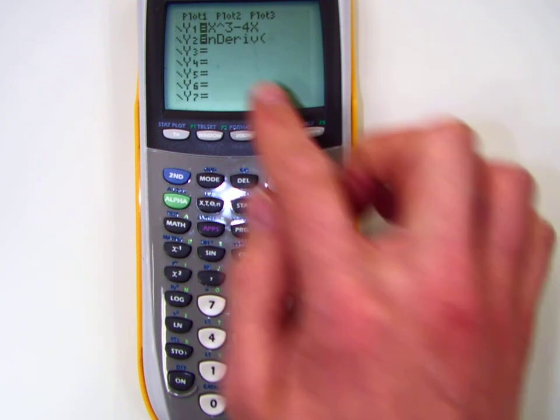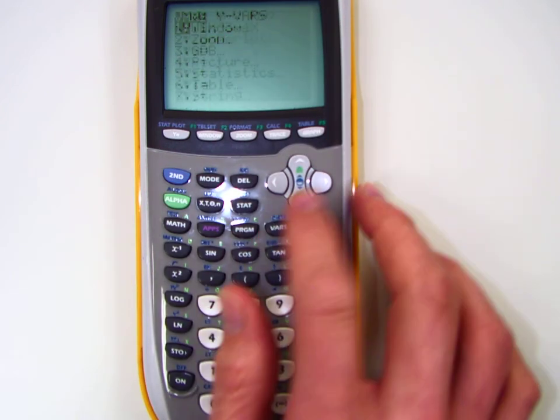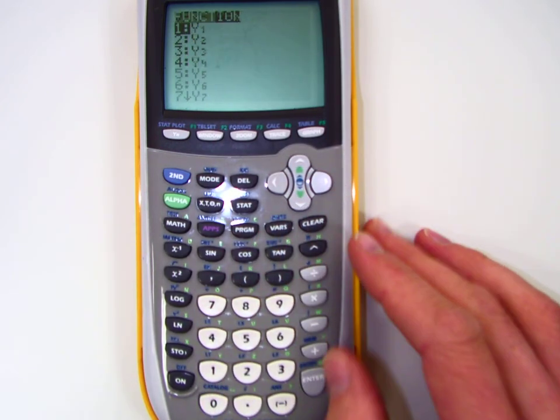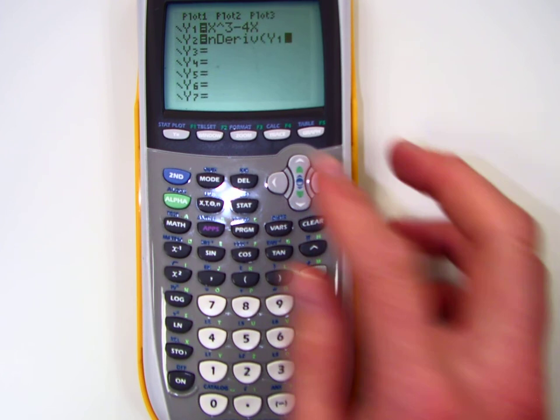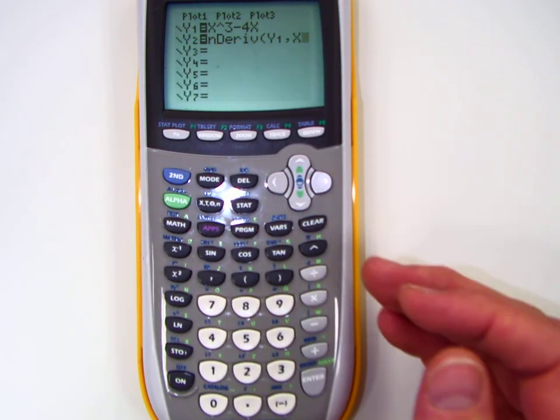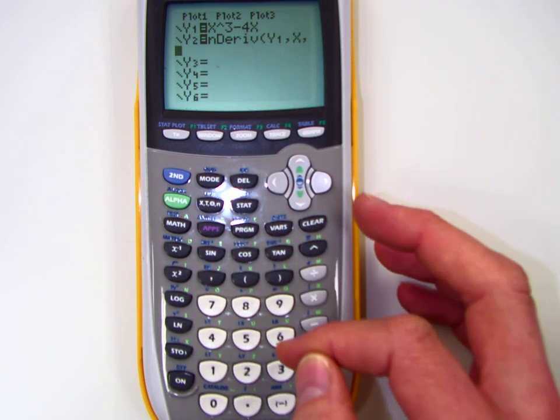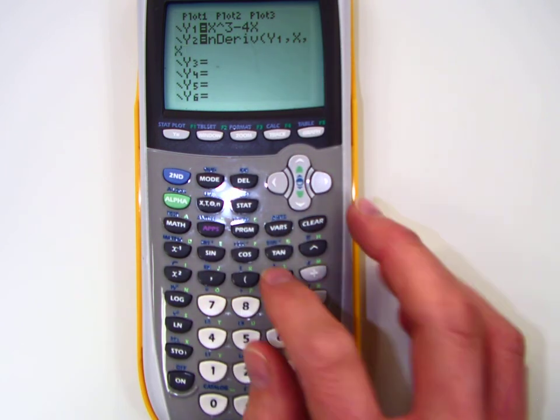One of the interesting ones is nderiv. I can actually graph the derivative of this function. So what I do is I write nderiv, and then I hit vars, and go over one, function, y1, which means function one, which is y1, comma x, because we're deriving, this is deriving in respect to x, and then we're not plugging a number in this time, but we're plugging x in.